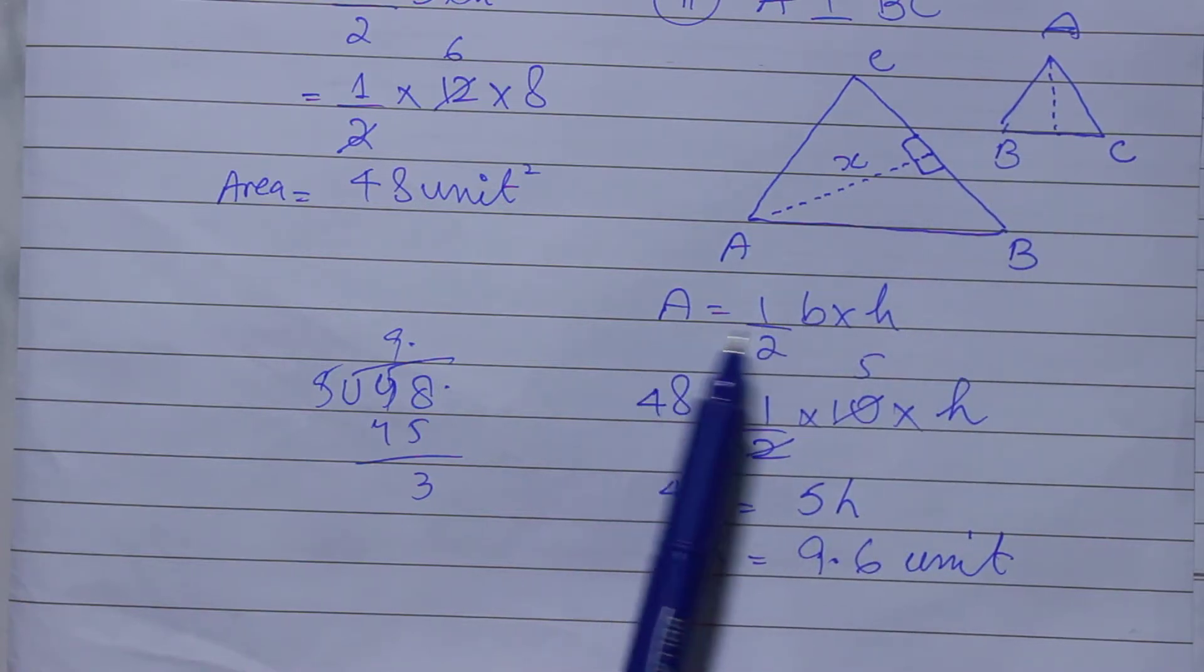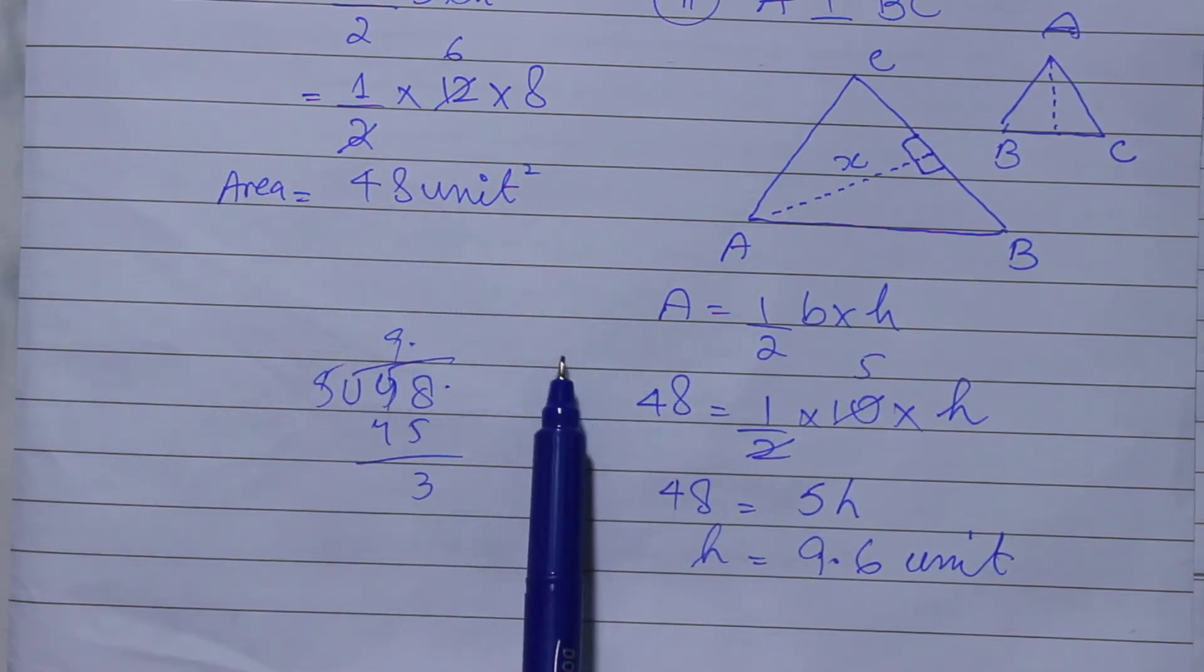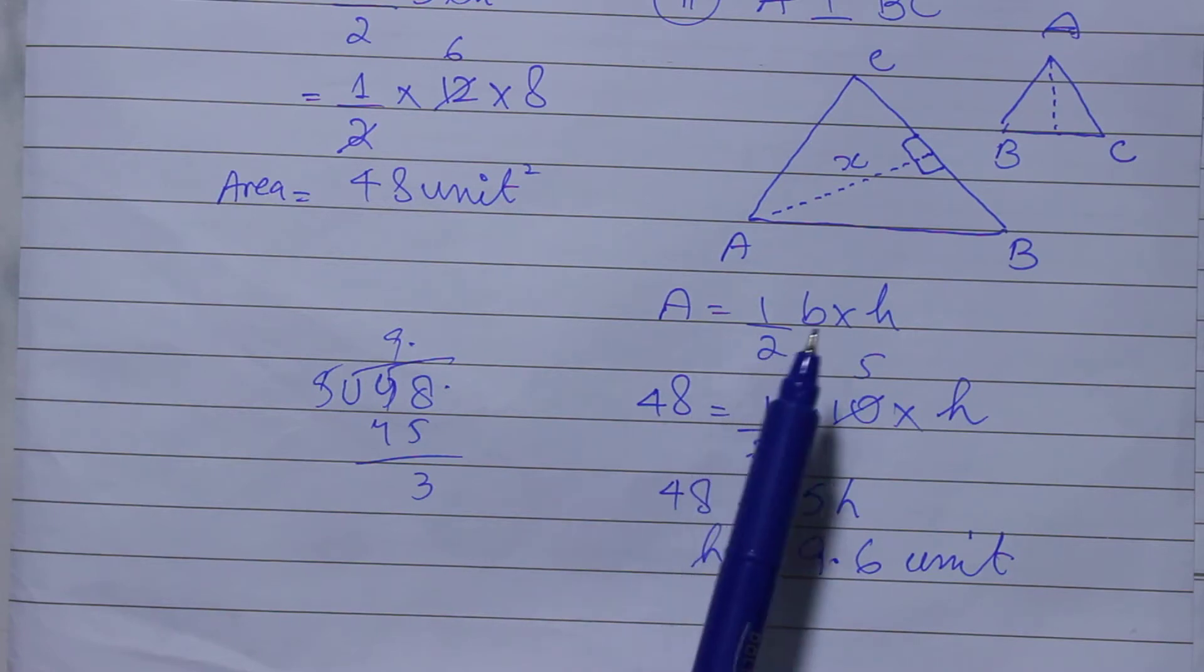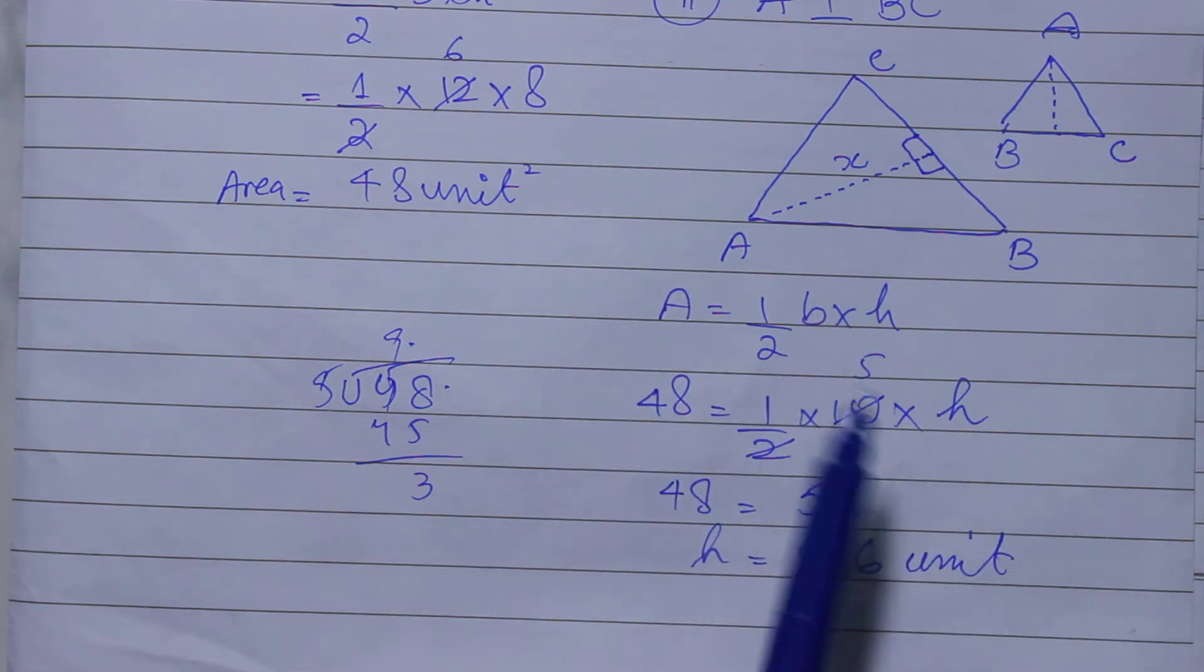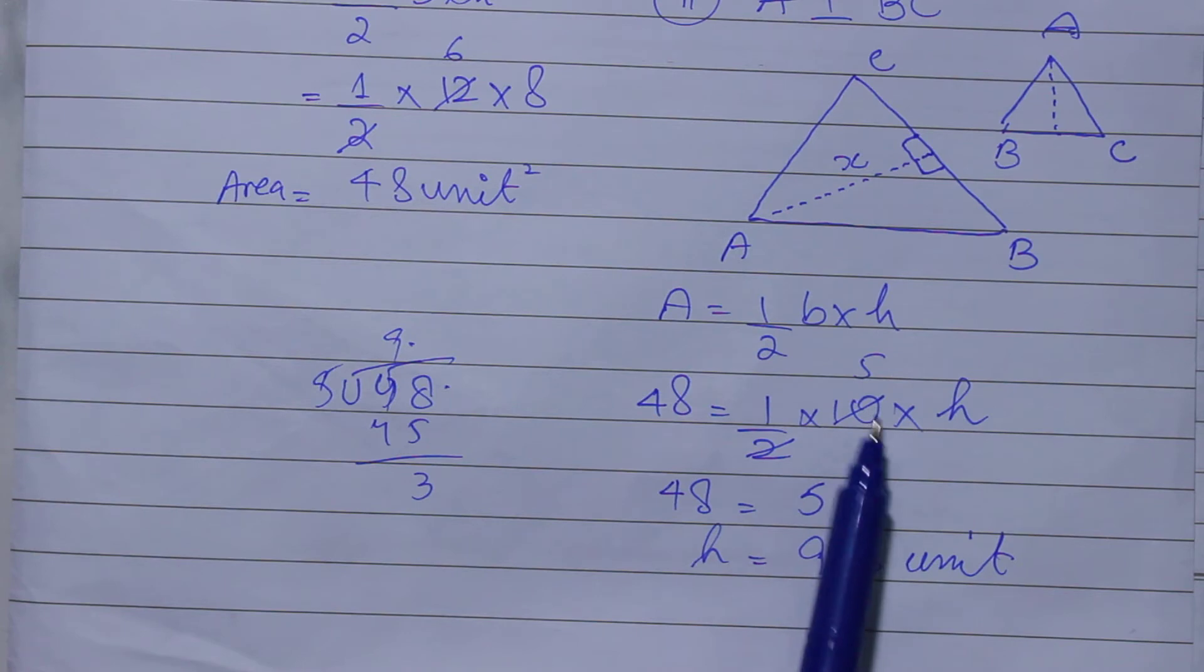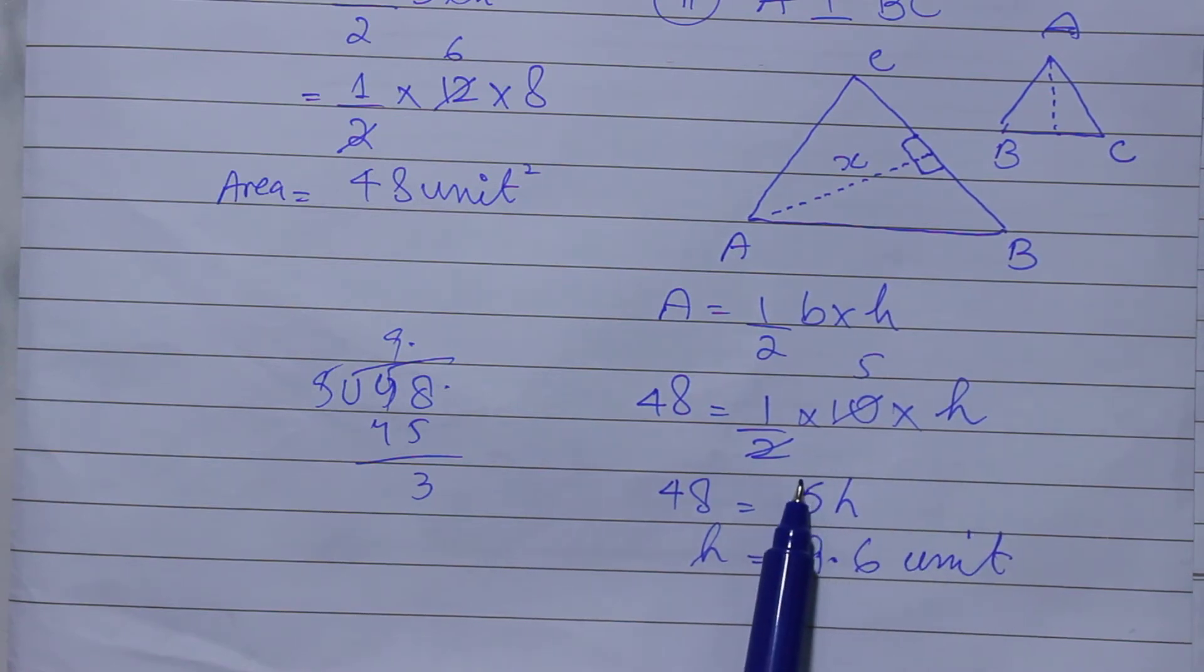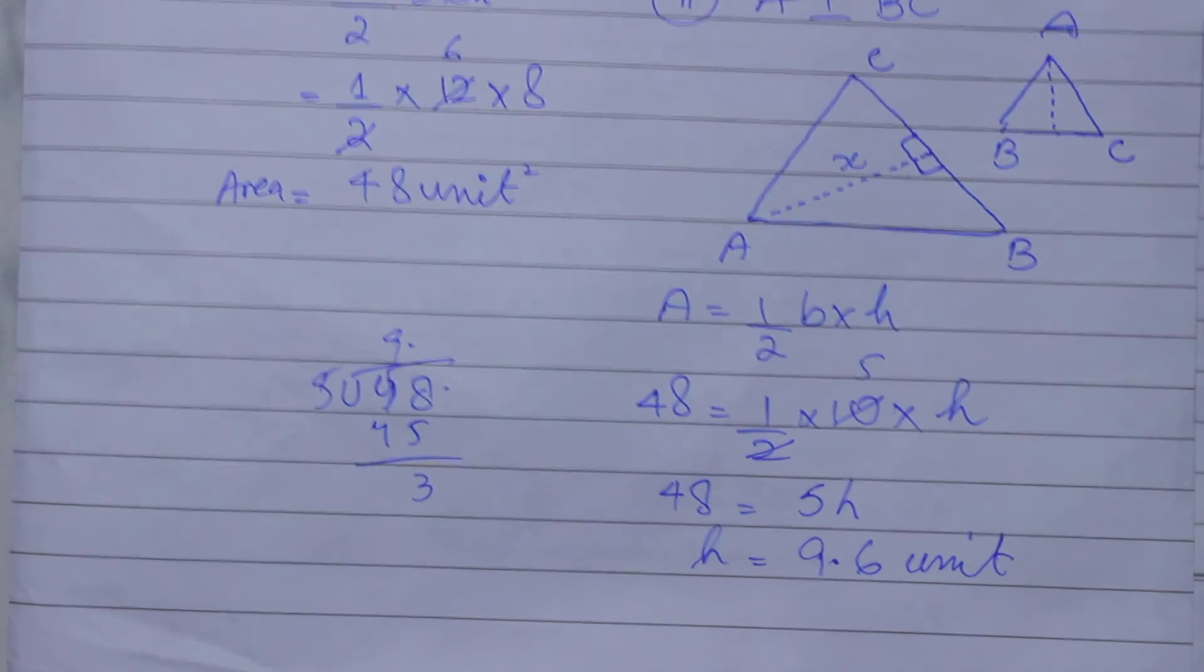The area is 1 upon 2 base into height. Area is 48 unit square. The base BC we have known in part 1, which is 10. The height you have to know. 2 into 10 reduces it - 2 times 1 is 2 and 2 times 5 is 10. This will be 5H, and your answer will be 9.6.